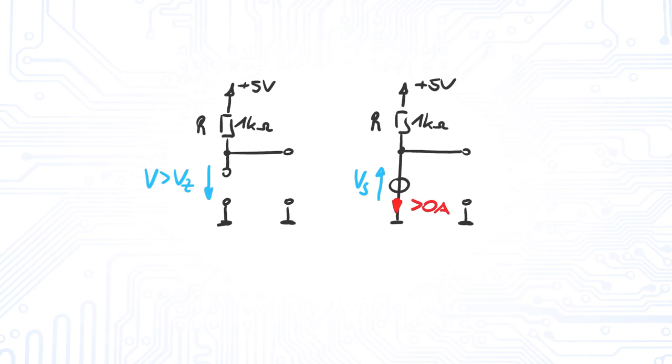If we had assumed any other region of operation for the Zener diode, we would have gotten results that don't add up. If we pick the wrong region of operation, we simply correct our assumptions and redo the calculations.